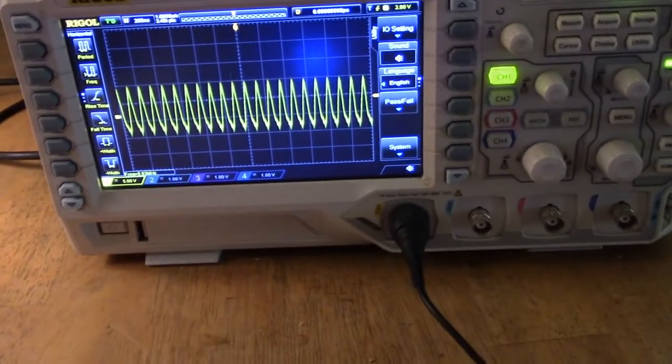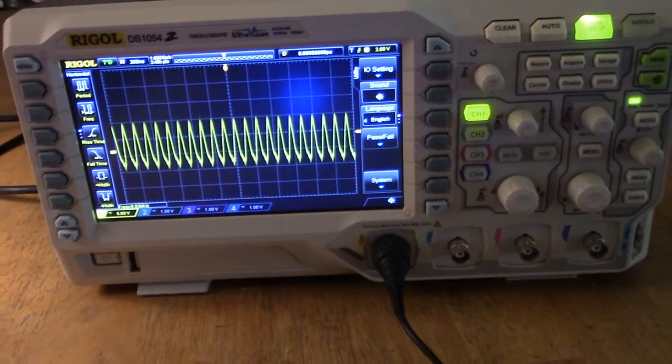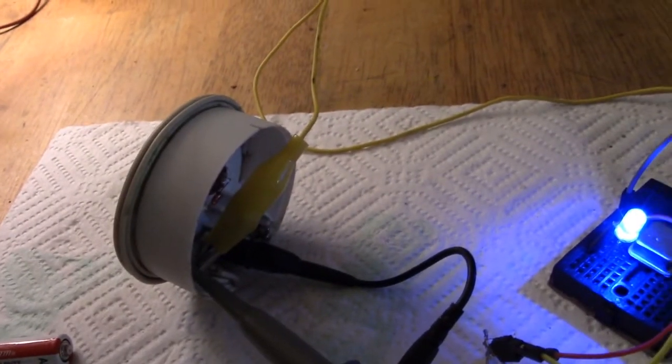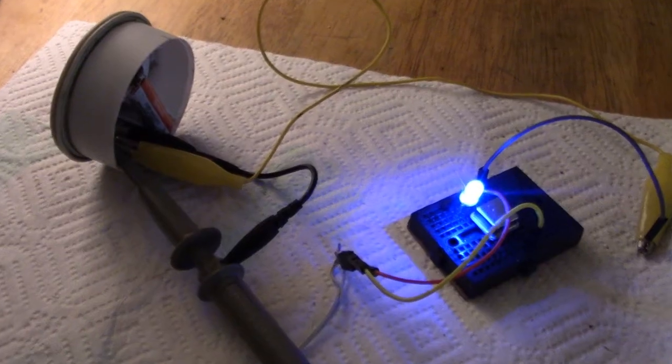show on the scope the nine megahertz, and we've got a decent wave there. However, if I go for the wireless output, there's nothing there. What I'll do next is put the battery in and see what happens.